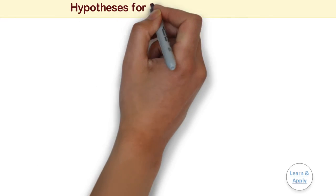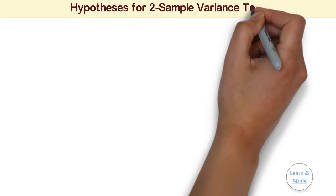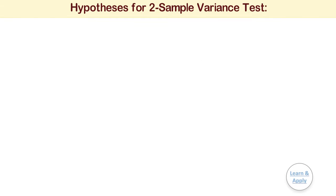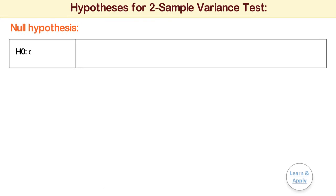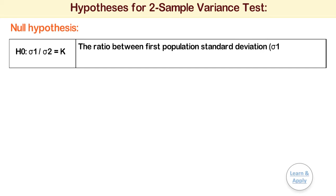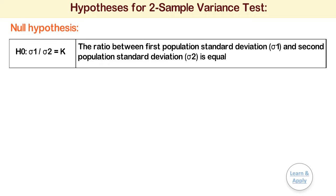Hypothesis for two-sample variance test. For a two-sample variance test, the hypotheses are as follows. Null hypothesis: H0: σ1/σ2 = k. That is, the ratio between the first population standard deviation σ1 and the second population standard deviation σ2 is equal to the hypothesized ratio k. If you are testing the ratio of variances, then replace the standard deviation by variance in the hypothesis.